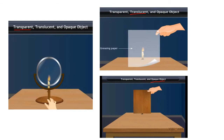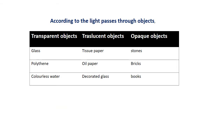Opaque objects are objects which do not allow light to pass through them. Examples are wood, plastic, and bricks. To summarize: transparent objects include glass, polythene, and colourless water; translucent objects include tissue paper, oil paper, and decorated glass; opaque objects include stones, bricks, and wood.